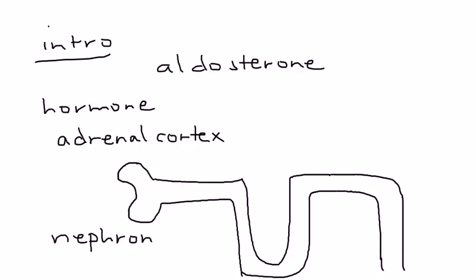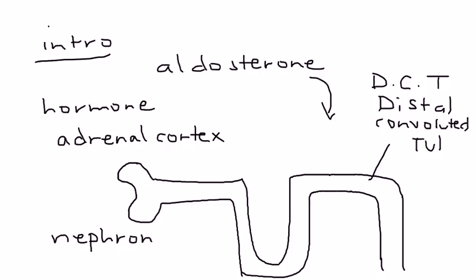And the hormone aldosterone works right here on a segment of the nephron known as the DCT. And the DCT stands for distal convoluted tubule.